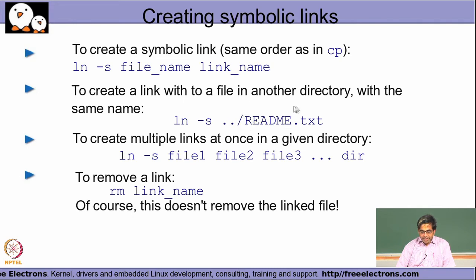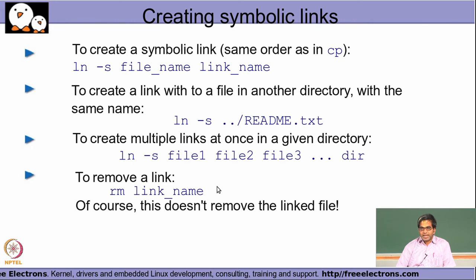For example, if there is a file called readme.txt in the parent directory, using ln -s ../readme.txt without an explicit link name creates a link called readme.txt in the current directory. To create multiple links at once in a directory, specify multiple file name arguments followed by the destination directory, and each file will be created as a link in that directory.